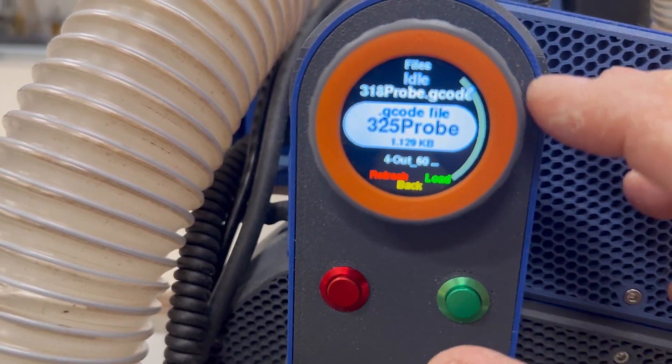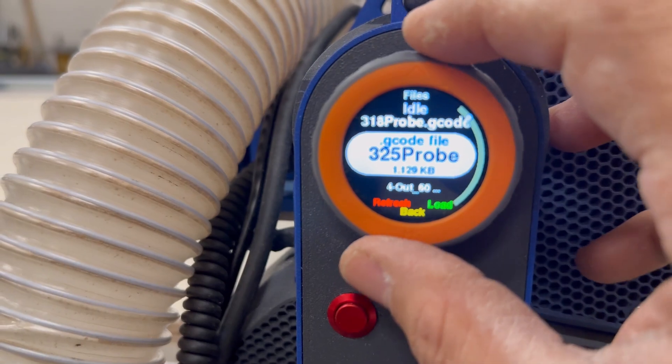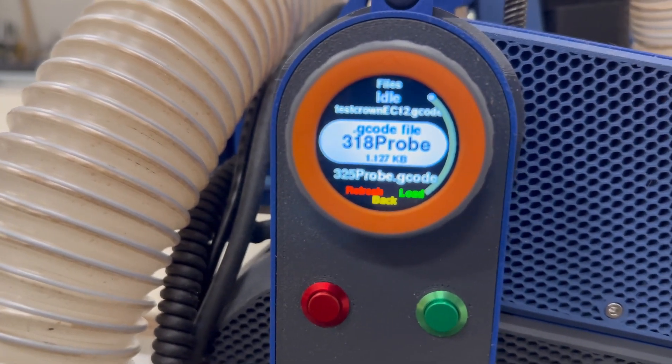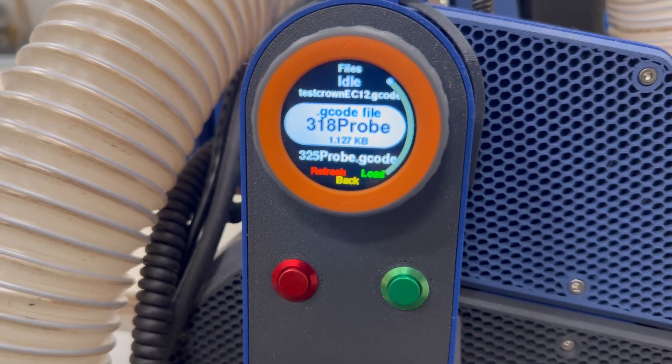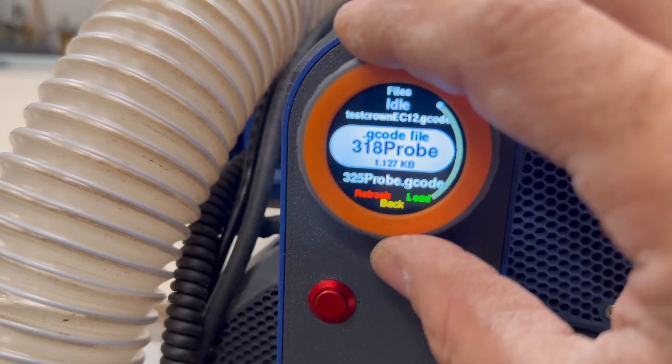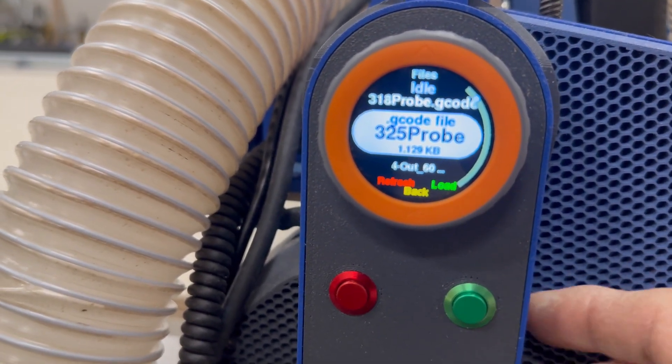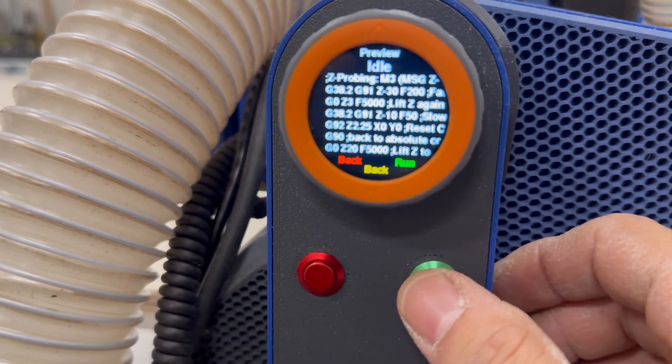And I also have one in there called 318, and as you guessed, that's for doing a three mil bit or an eighth inch bit. So I'm going to come here, do the quarter. I'm going to load it, and I'm going to click on run.